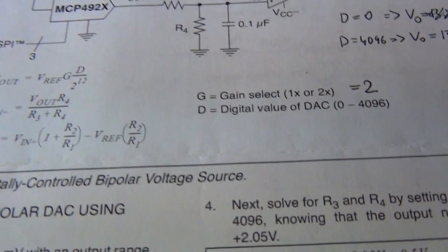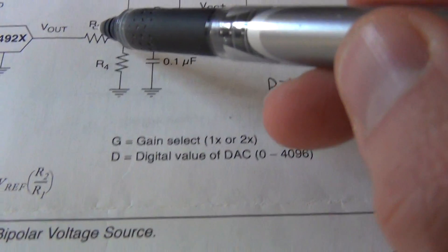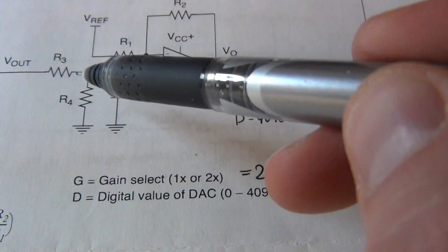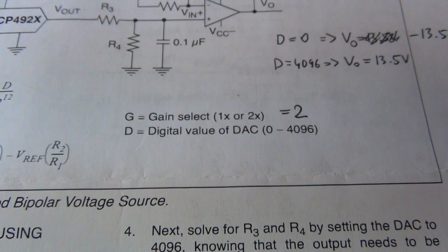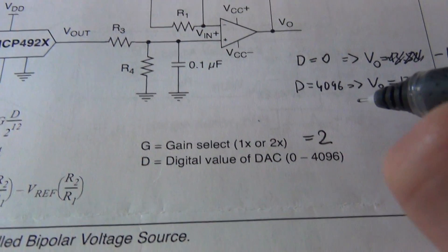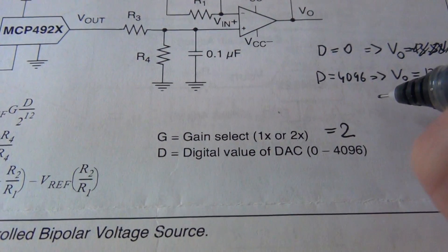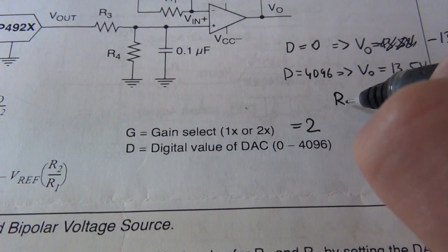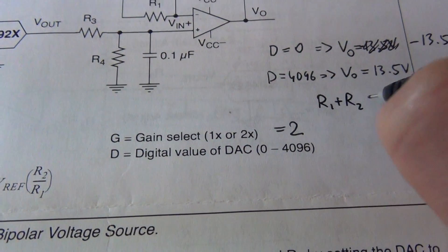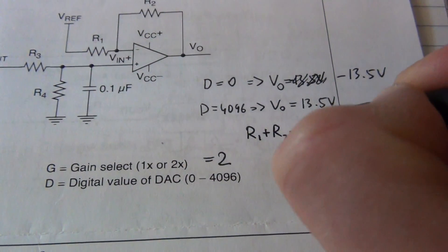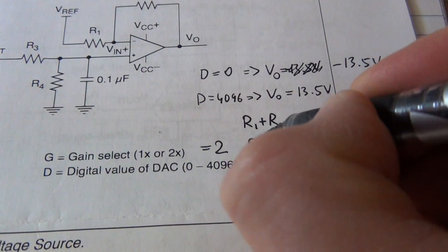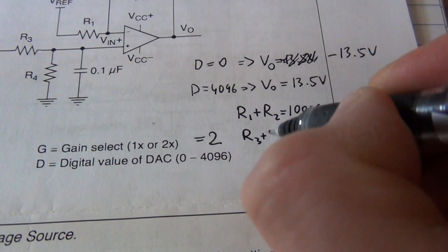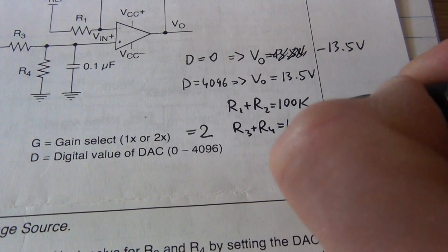We will use trimmers for the pair of resistors R3 and R4 and R1 and R2. So we will use 100K trimmers. So that means that R1 plus R2 is going to be 100K, and the same for R3 and R4. They are also going to be 100K.